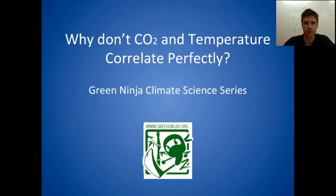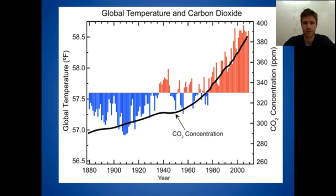What I mean by correlate perfectly is that if you look at graphs of CO2 or other greenhouse gases over time versus temperature, you'll see that they don't go up and down necessarily directly with each other. So here's a graph of global temperature represented by these bars and also CO2 concentration superimposed on top of that. And you see that CO2 concentration from the year 1880 to around 2010 has been increasing pretty steadily and has been increasing faster in recent decades than it did in the earlier part of the record.